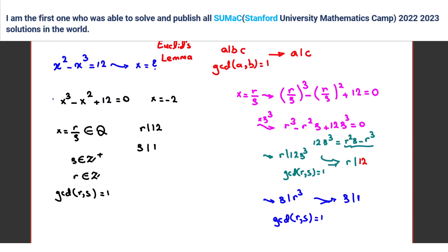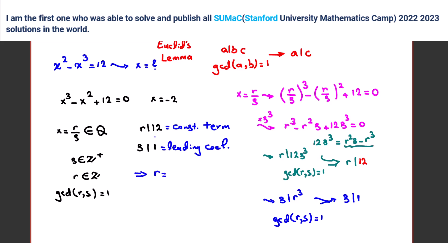Always pay attention to the leading coefficient. If it were 2, then s divides 2. So s divides the leading coefficient and r divides the constant term. Since r is an integer that divides 12, r can be ±1, ±2, ±3, ±4, ±6, ±12. Since s divides 1 and s must be positive, s can only be 1.